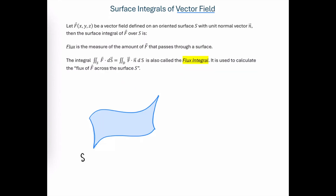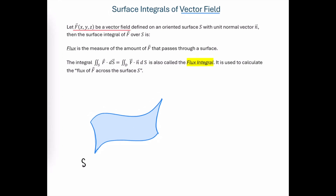Let's consider some surface S, and we're going to think of this as like a piece of fabric, or a piece of mesh, or something where a fluid or a force could pass through it. And let's look at our vector field F that is moving through this surface.